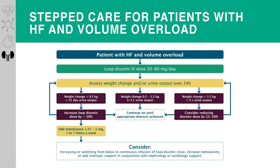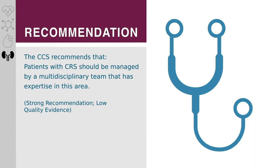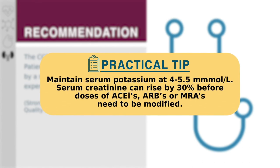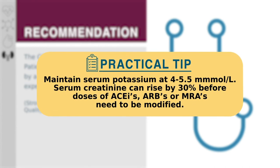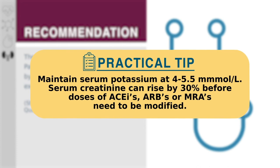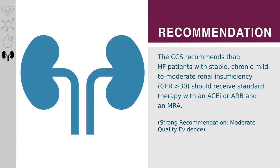Daily weights are more easily and accurately assessed than urine output. The CCS recommends that patients with cardiorenal syndrome should be managed by a multidisciplinary team. Serum potassium should be maintained at 4 to 5.5 millimoles per liter. The serum creatinine can rise as much as 30 percent from baseline before it becomes necessary to stop or reduce the dose of ACE inhibitors, ARBs, or MRAs. The CCS recommends that heart failure patients with stable, chronic, mild to moderate renal insufficiency (eGFR greater than 30) should receive standard therapy with an ACE inhibitor or ARB, and an MRA.